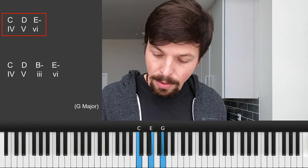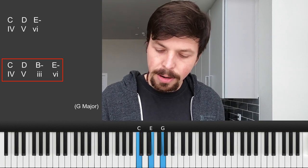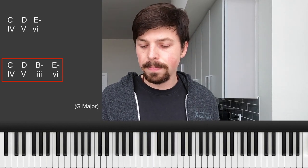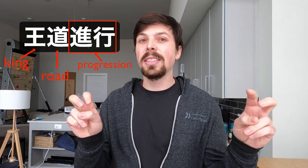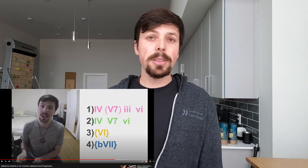The first progression is 4-5-6 and the second is 4-5-3-6. The 4-5-3-6 is so common in fact that Japanese musicians often refer to it as the Odoshinko, which means the Royal Road progression — essentially like walking a really well-traveled path, like the road built by the emperor's government. It's in possibly hundreds of anime openings and I actually covered it in my most popular video called Common Chord Progressions in Japanese Music.